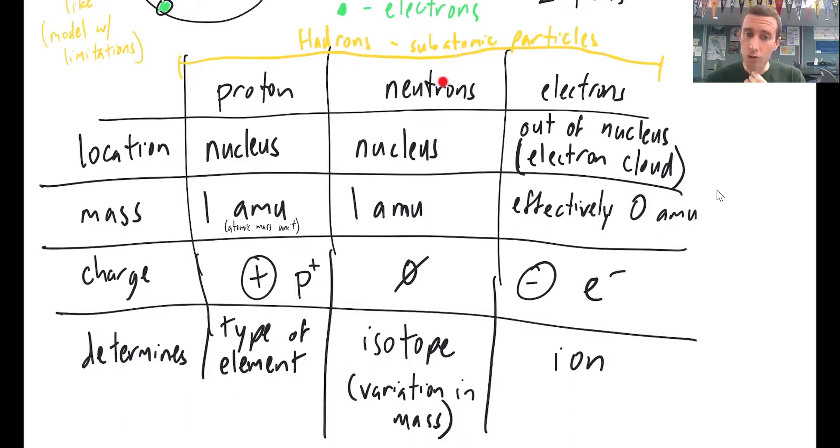The neutrons determine the isotope. So an isotope is a variation in mass within one atom. So an isotope is that variation in mass, and that's determined by the neutrons.